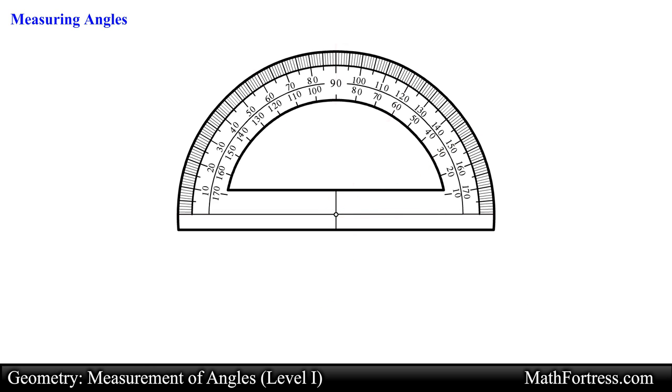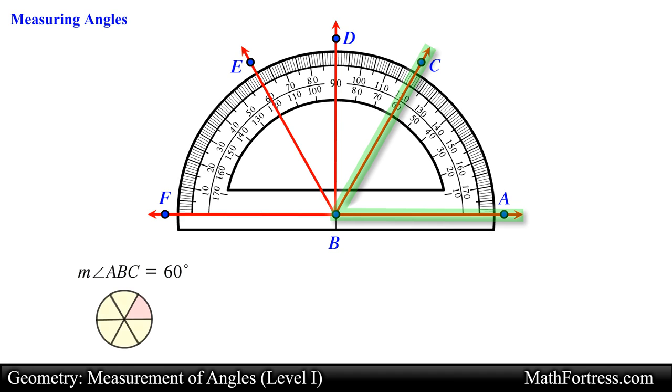If we have multiple angles that share the same vertex like the following figure we need to use three letters to denote each of the angles. In this example angle ABC measures 60 degrees. This angle measure is equivalent to one sixth of a revolution around a circle.